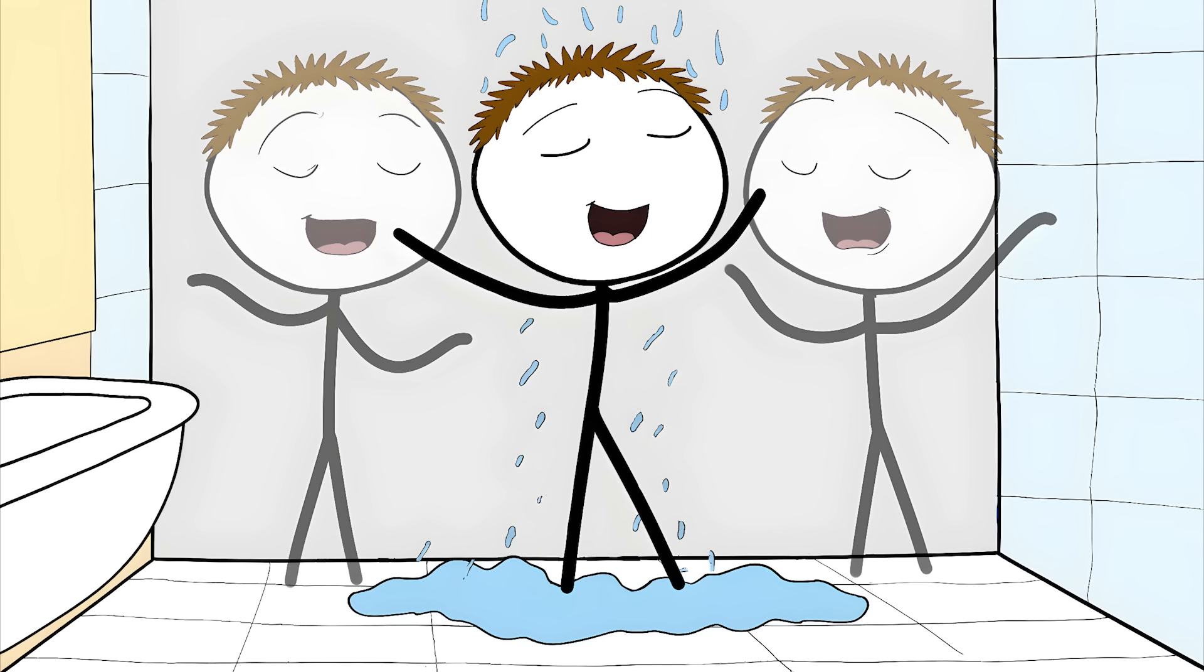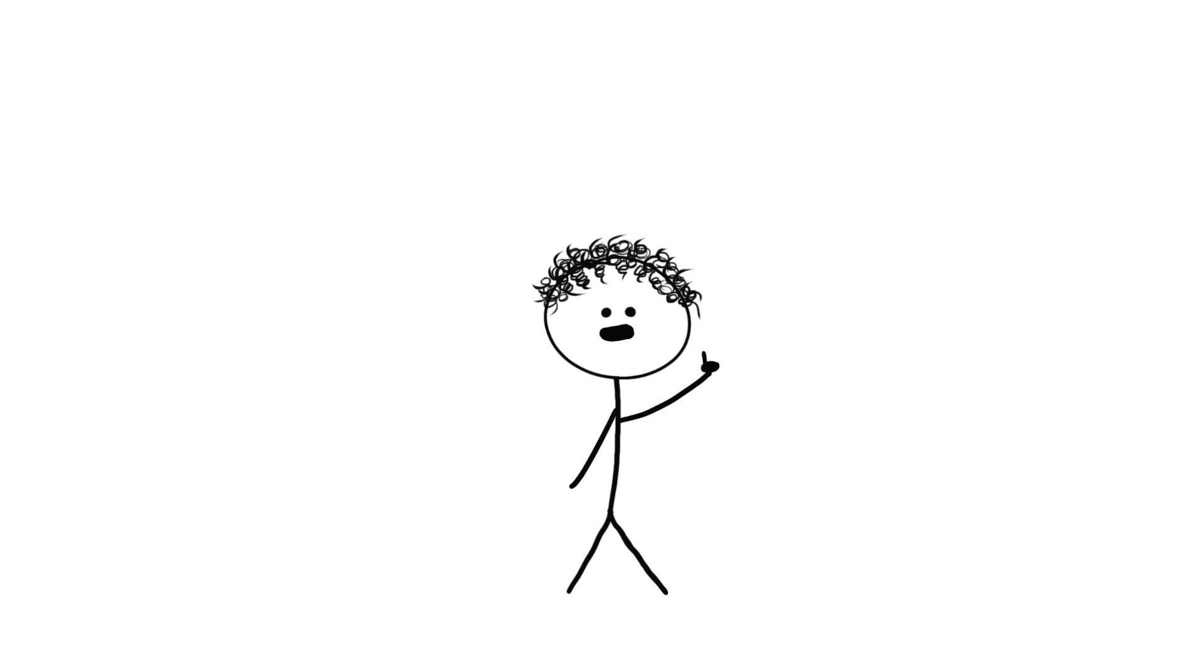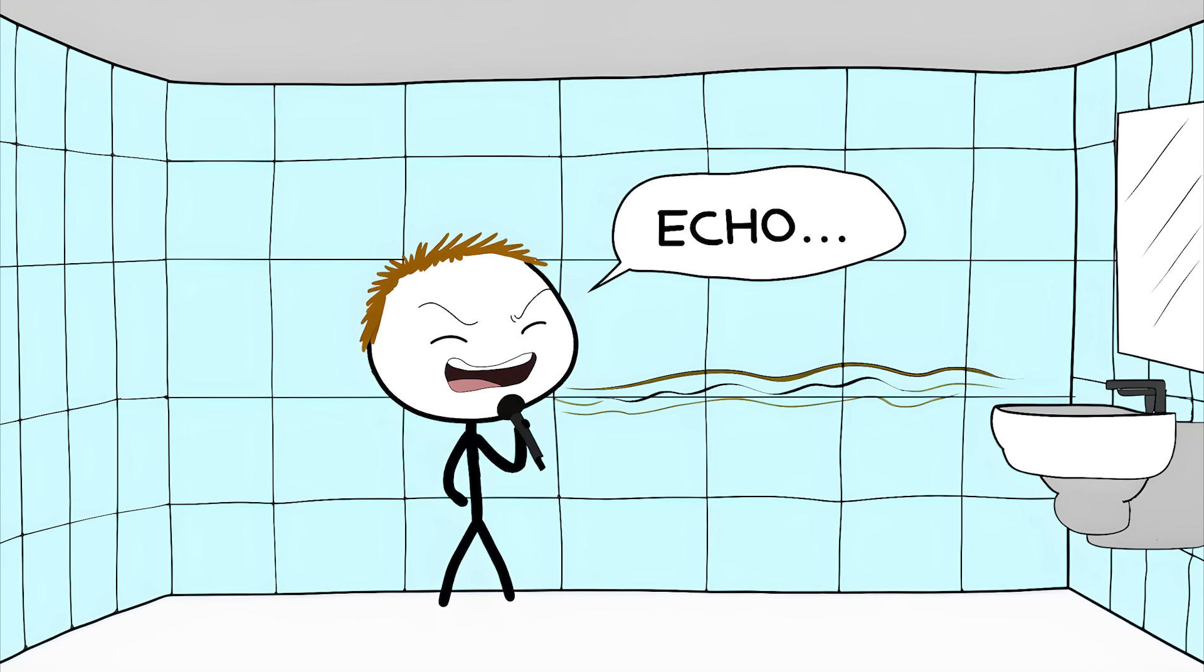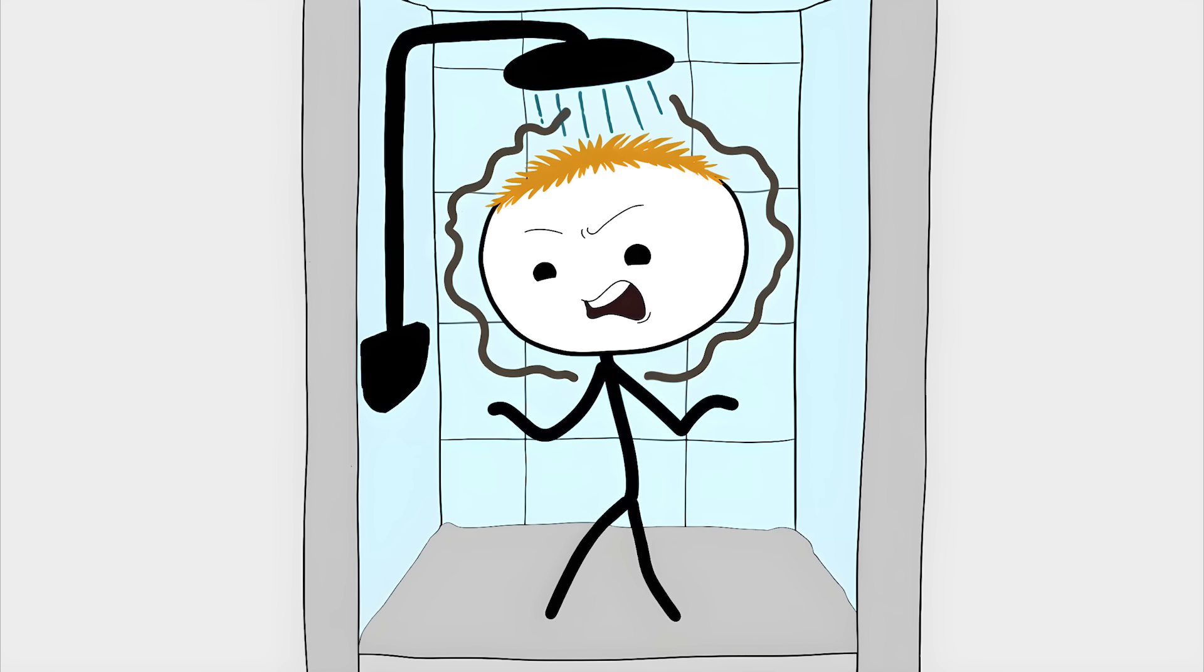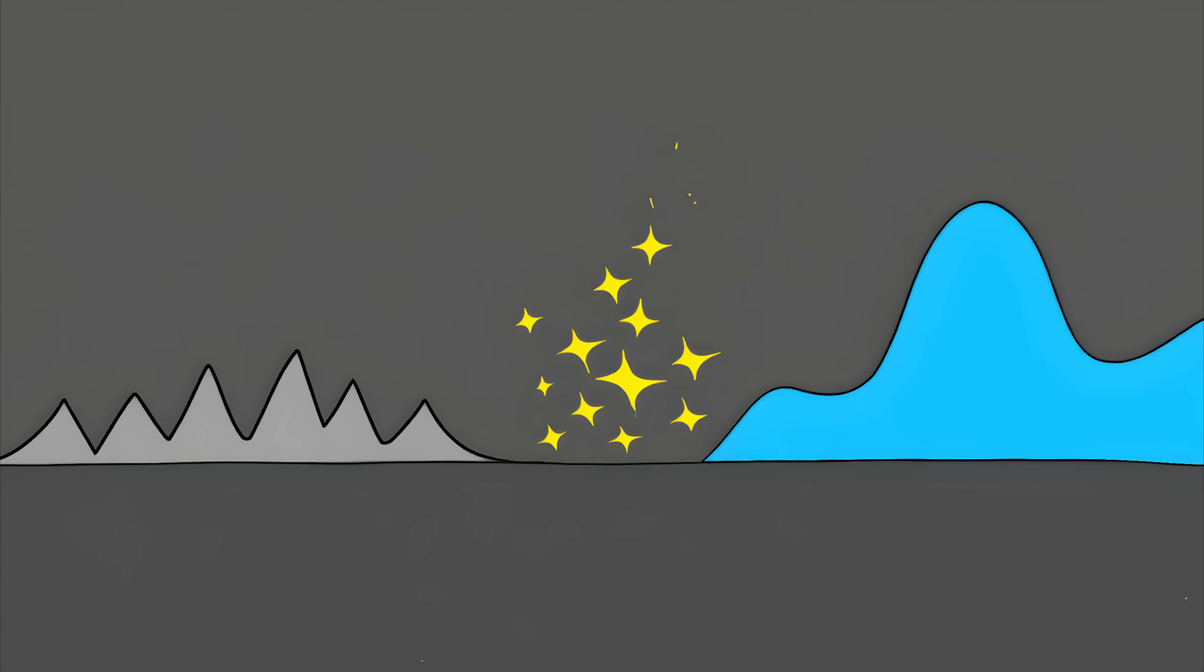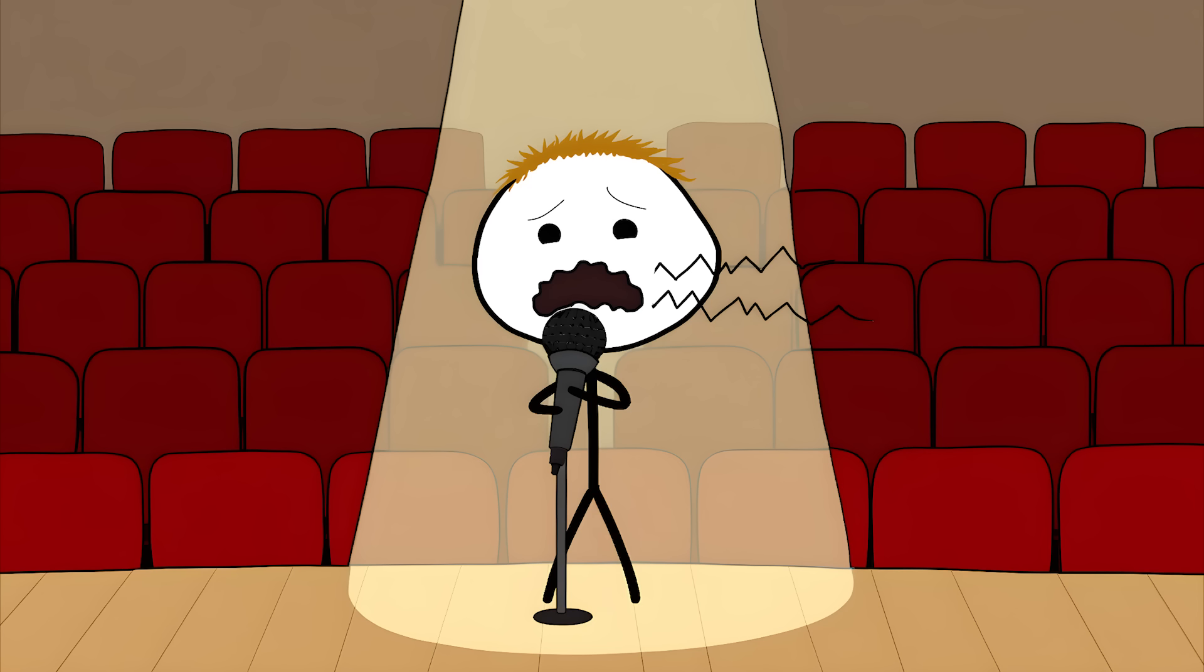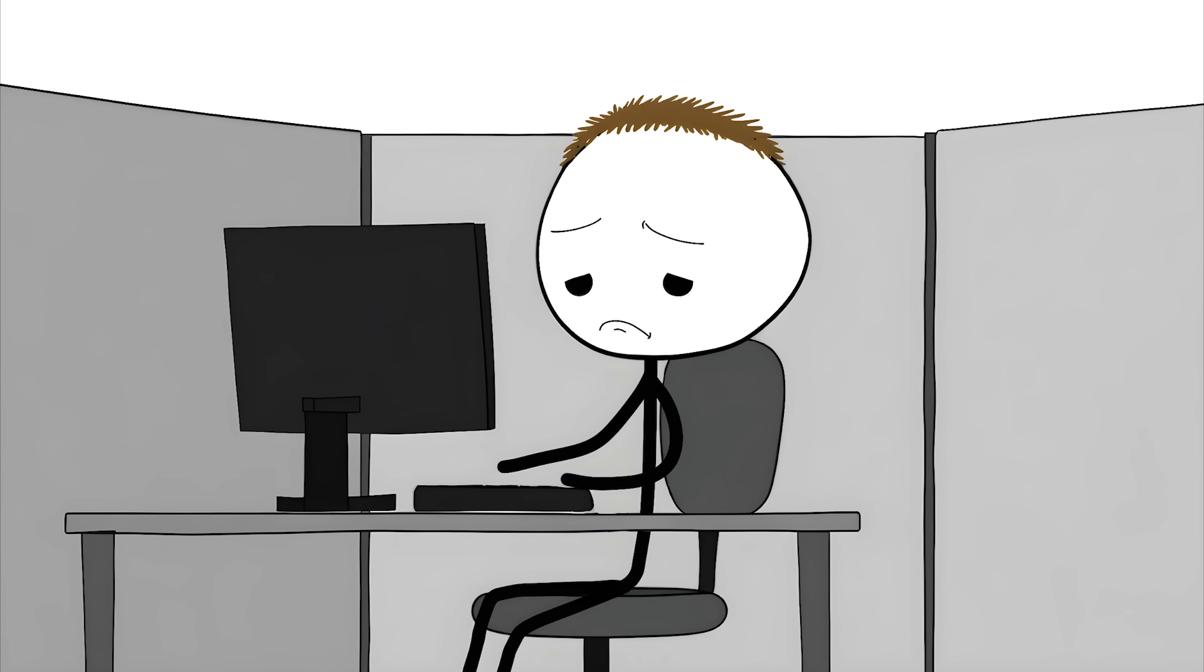Instead, your brain blends all these reflections into one rich, full sound. It's like having a choir of invisible yous backing up your performance. This is called reverberation or reverb. Your shower hits the sweet spot. If it were much bigger, you'd get distinct echoes. If it were smaller, the sound would get muddy. The reverb also masks all your pitch problems and vocal wobbles. It's like Instagram filters for your voice, making everything sound better than it really is.